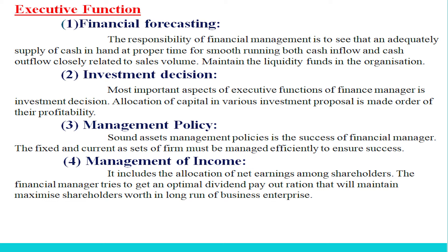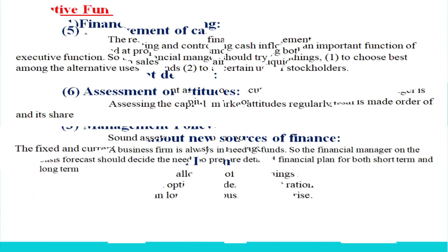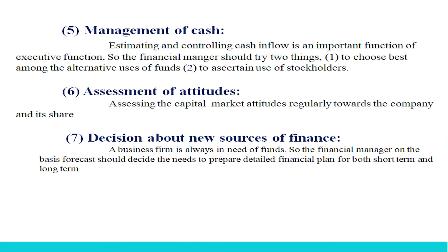The next executive function is management of income. It includes allocation of net earnings among shareholders. The finance manager tries to achieve an optimal dividend payout ratio that maximizes shareholders' worth in the long run. The next is assessment of attitude — it is the capital market's attitude towards the company and its shares, and the financial manager is responsible for assessing this capital market attitude.